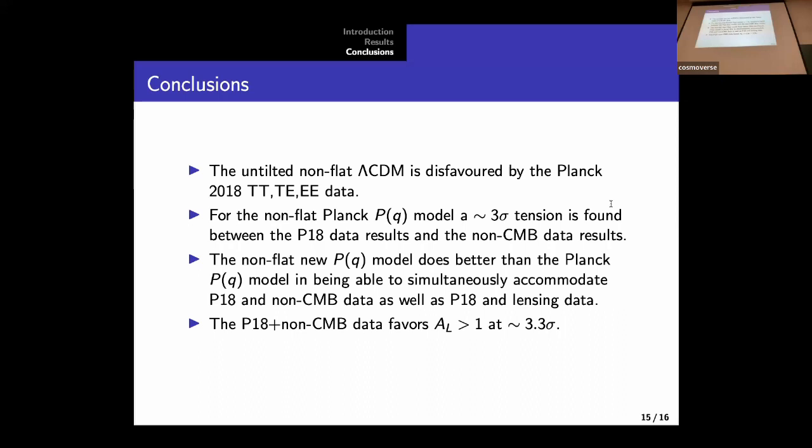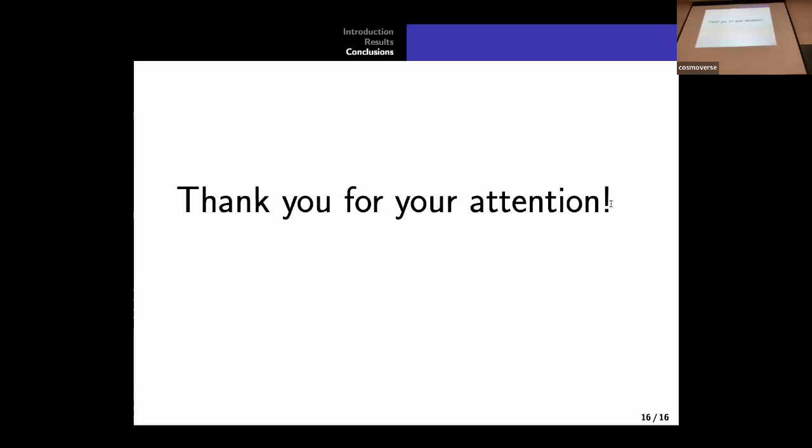Just let me conclude by mentioning the most important things. The untilted model is very disfavored by the P18 data. So this means that we need to consider a power spectrum with a tilt. We have observed three sigma tension in some of the results for the Planck power spectrum model. The non-flat new power spectrum model does better than the Planck power spectrum model accommodating these datasets. And finally, we have a remarkable evidence in favor of a value for the lensing parameter greater than one. So this is all I want to say. Thank you very much for your time.